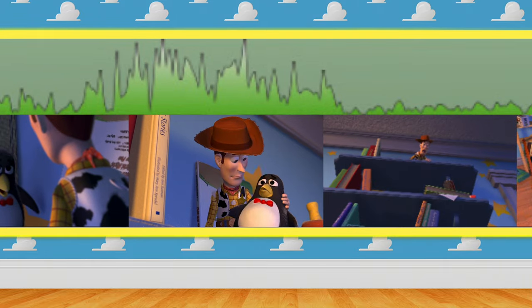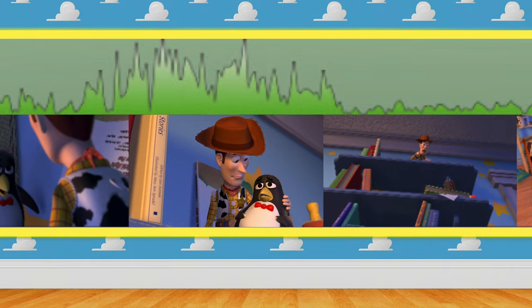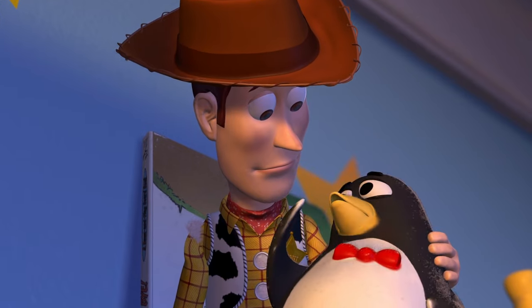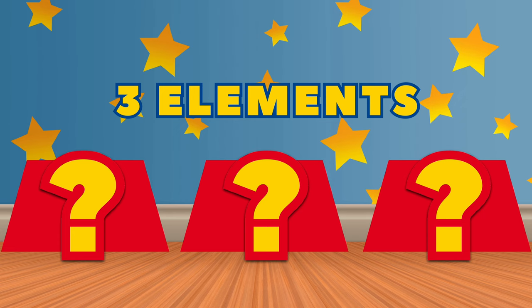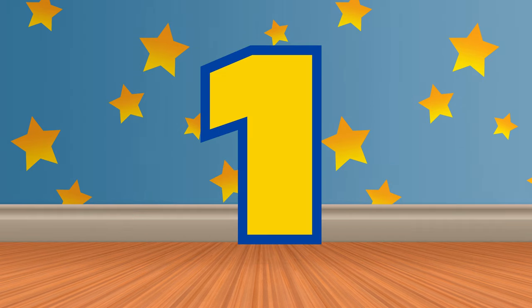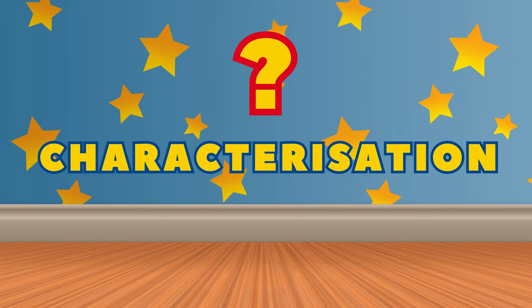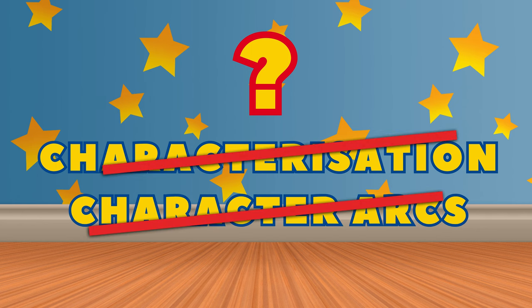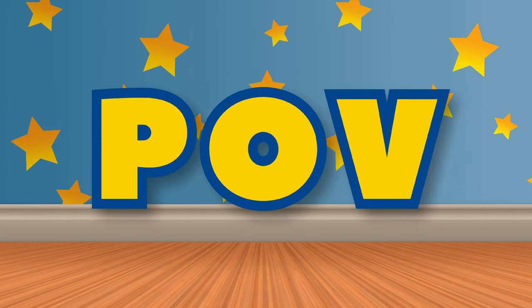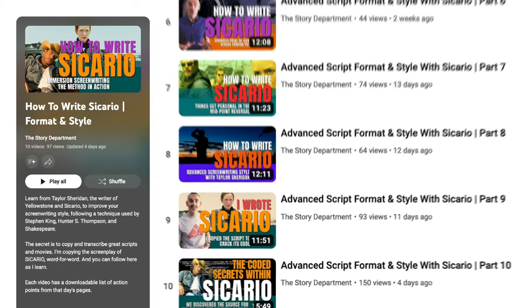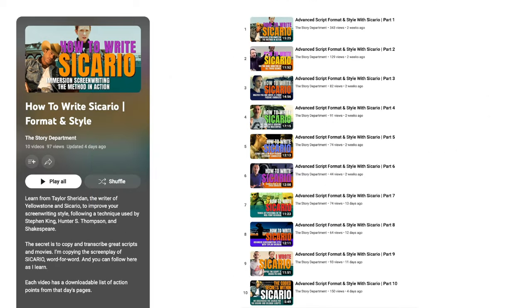This clip from Toy Story 2 is a mini story in its own right, and even if it has no immediate resolution, it still has all three core elements of a screen concept. You might have guessed that character goes first, but the reason character goes first has nothing to do with characterization or arcs, but everything with point of view. Watch our videos about the Sicario script and you'll see how critical POV is in getting the story right.